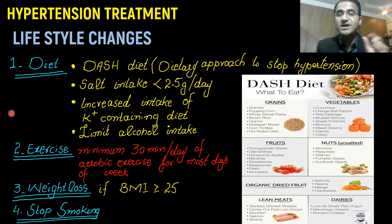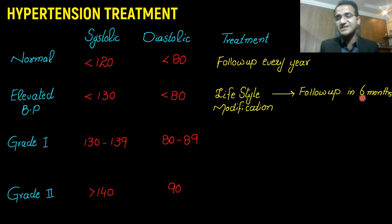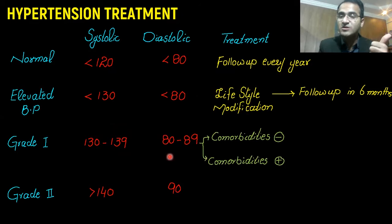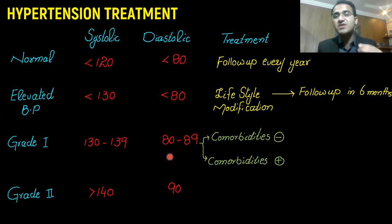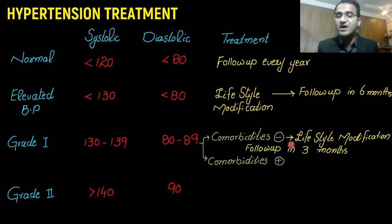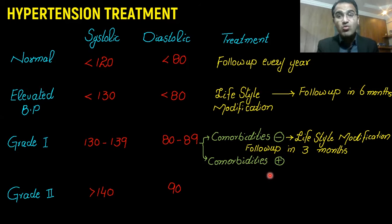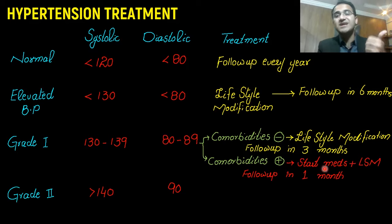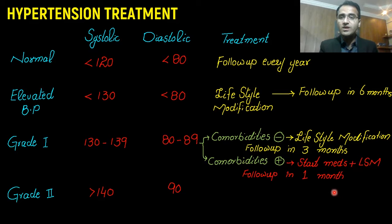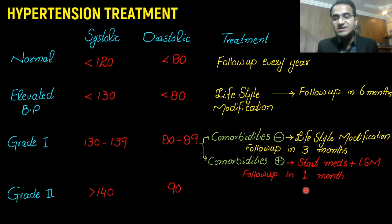For grade 1 hypertension, treatment depends on whether the patient has comorbidities such as diabetes mellitus, coronary artery disease, or risk of stroke. If no comorbidities, do not start medication — advise lifestyle modification and follow up in three months. If comorbidities are present, these patients are at high risk of complications, so start medication with lifestyle modification and follow up in one month to assess whether dose titration or medication change is needed.